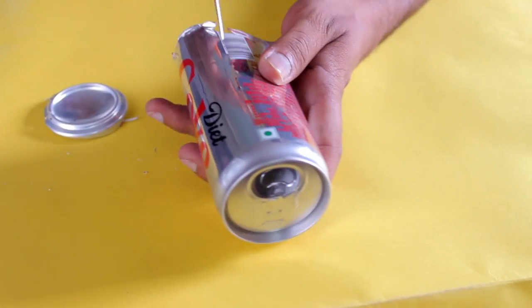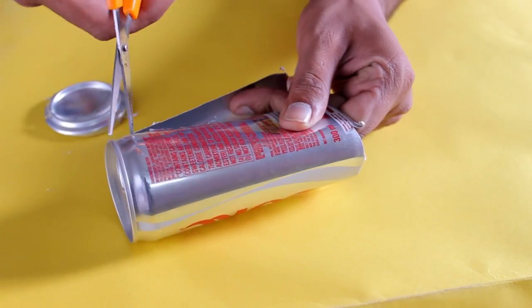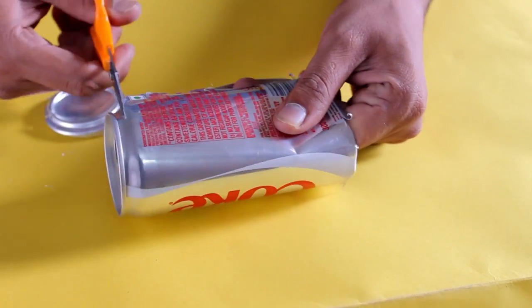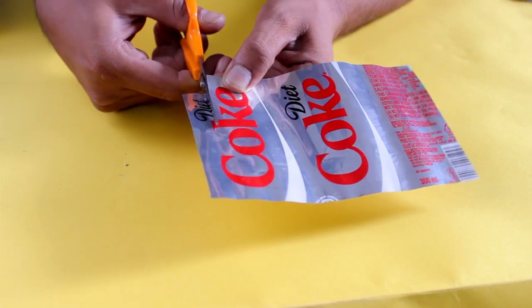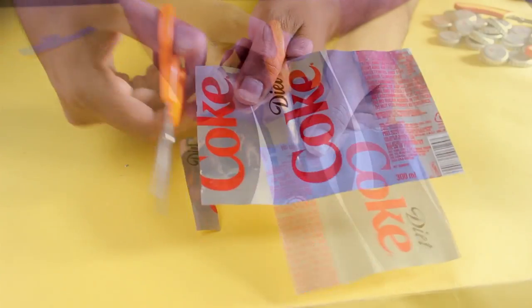Firstly, cut and separate the aluminum sheet from the tin. It looks like this. After cutting and separating, make a small portion of breadth approximately half inch and another small portion of breadth approximately one inch.